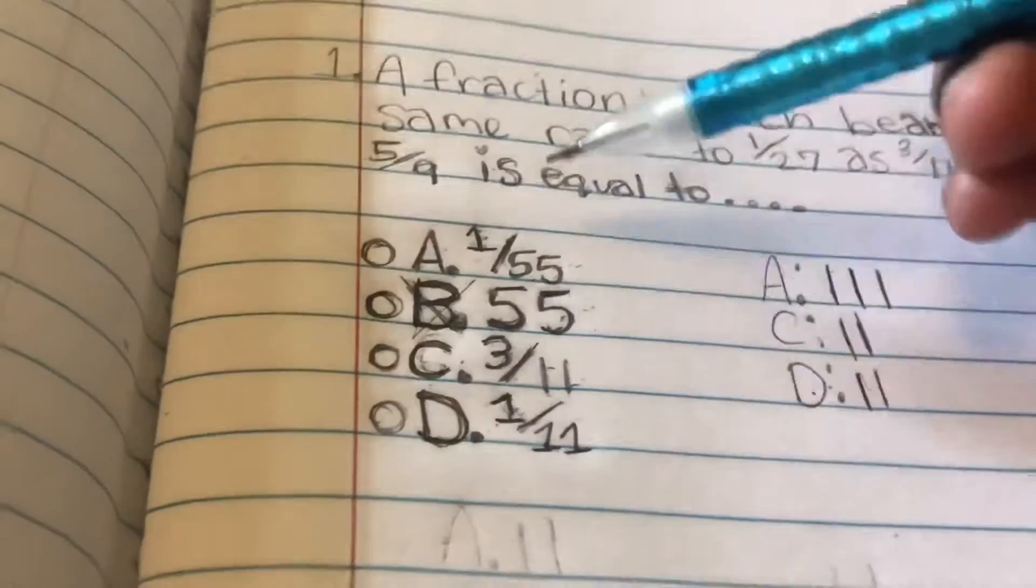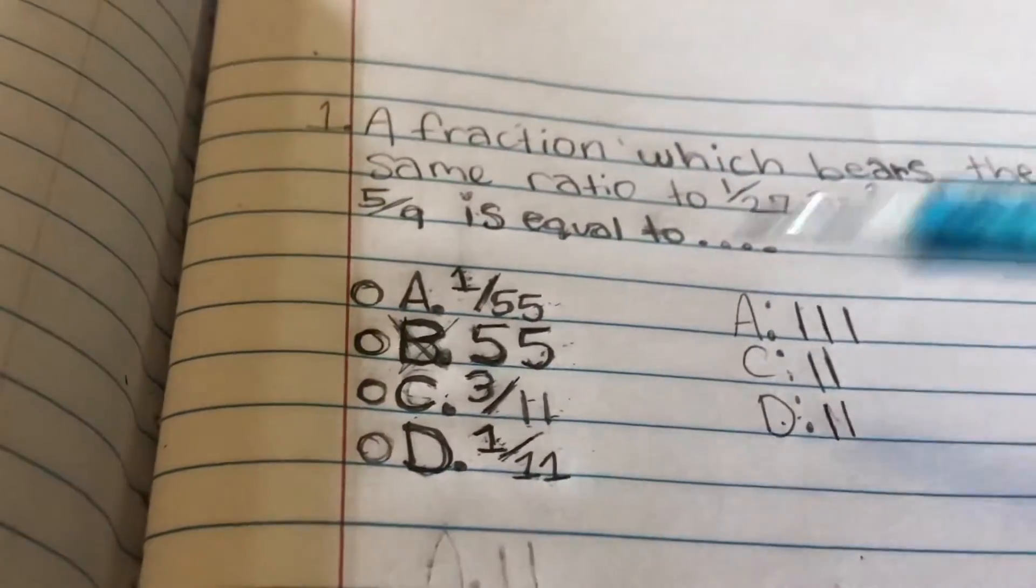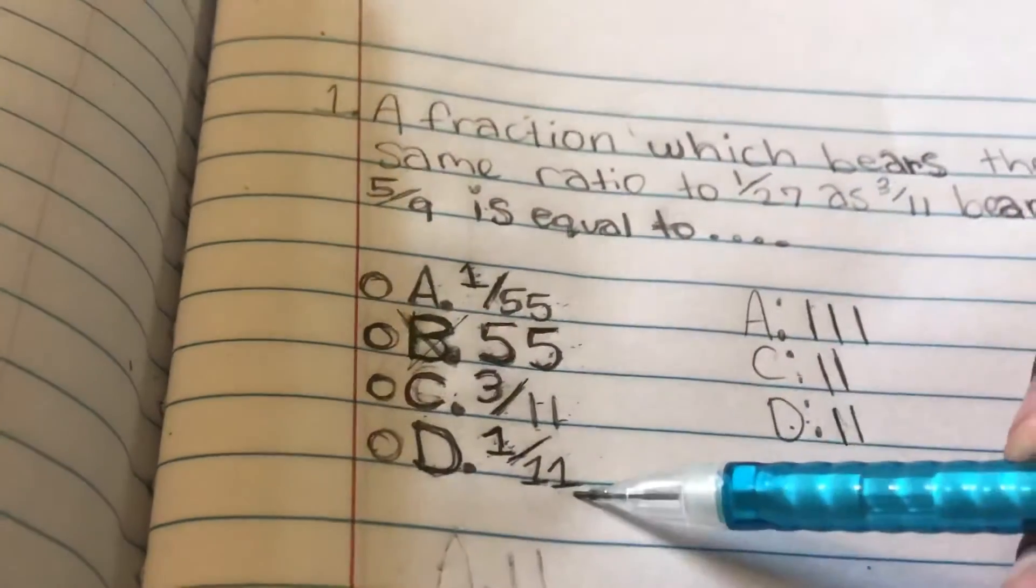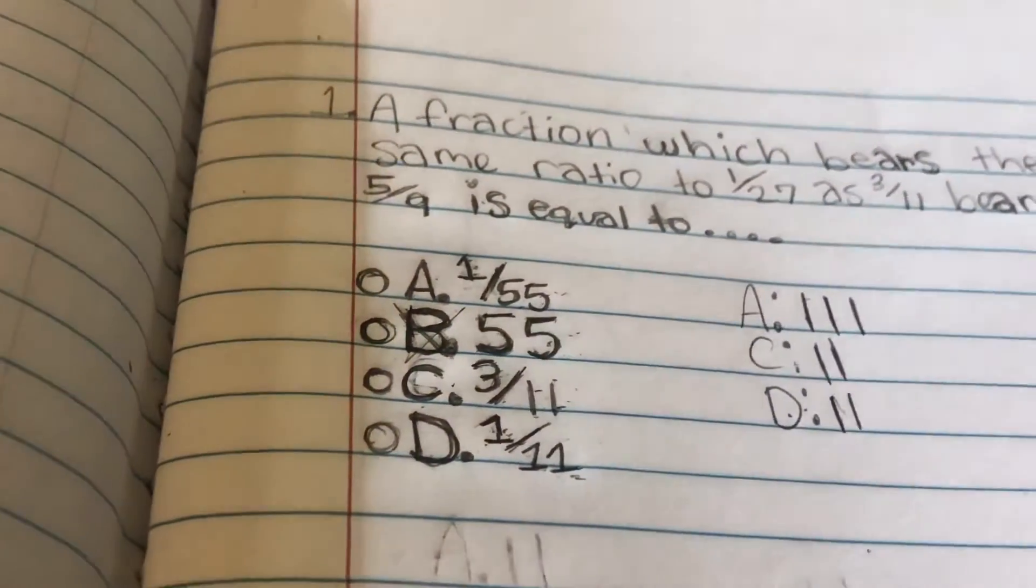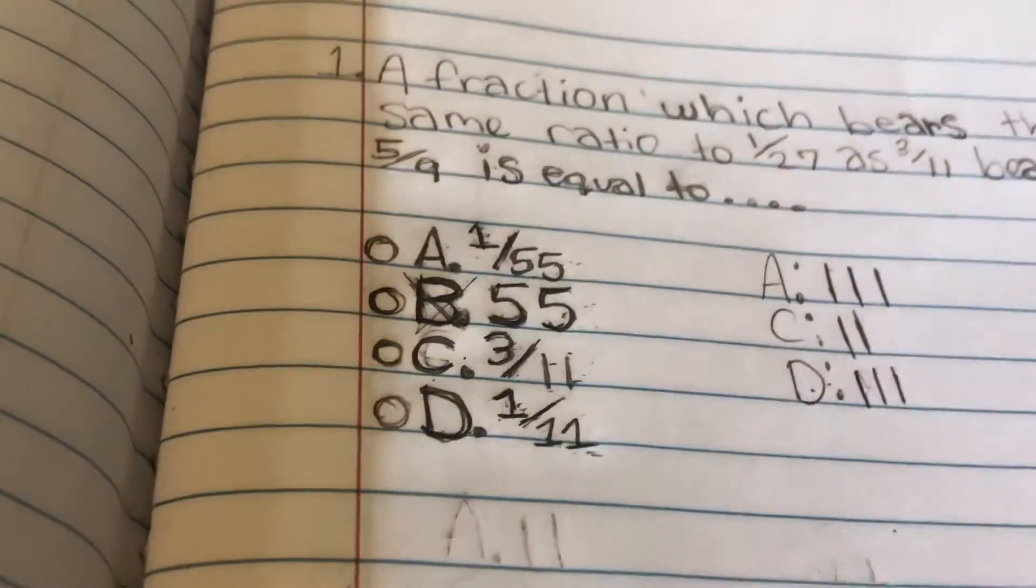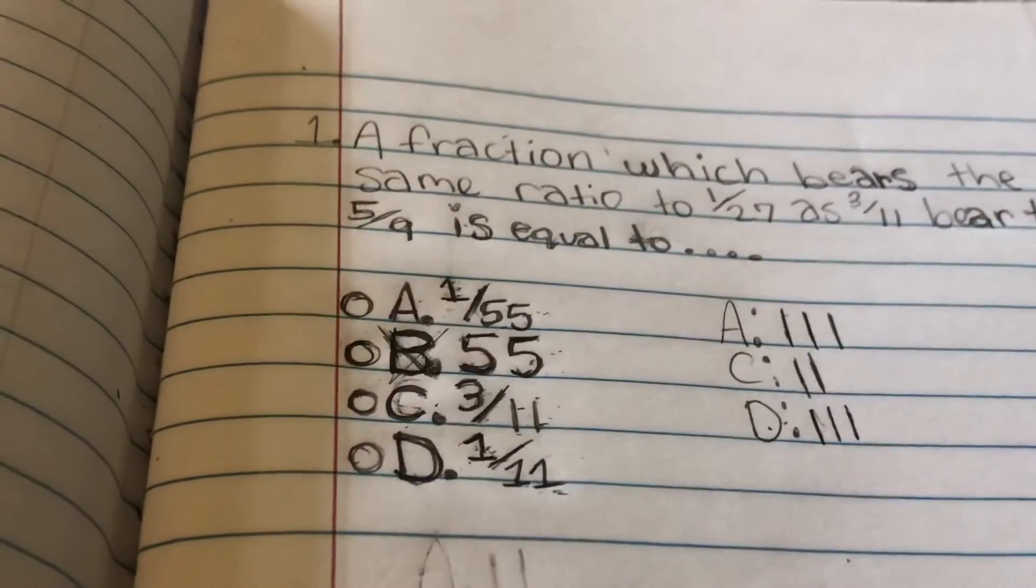So now we look at D again, and this has 11 in the denominator. C also has a denominator of 11, so that's another three. And off the bat, now we can knock out C because it only has two tally marks.